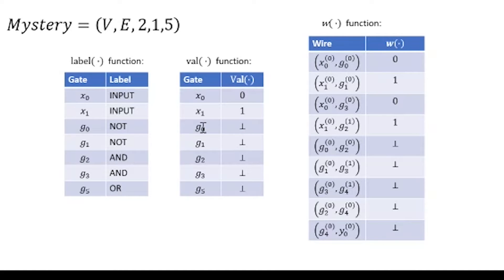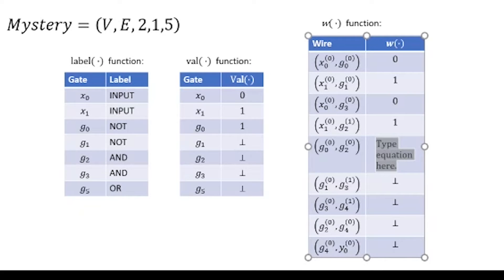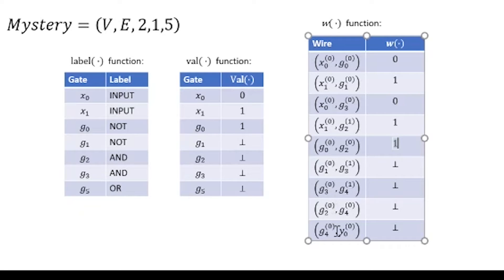Next we look for any gates that are currently undefined where all of that gate's inputs are defined. Looking at the right-hand side of all these wires, we can see g0 has only one input — the one that came from x0 — so the input to g0 is 0. We look up the label of g0, which is NOT, so we do NOT 0, giving us 1 as the value for g0. We update the w table: every edge with g0 as the source now carries 1.